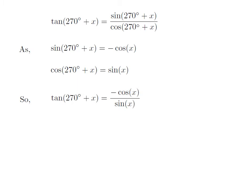Let us apply the above identities in the above expression of tangent of 270 degrees plus x. So tangent of 270 degrees plus x equals minus cosine of x divided by sine of x.